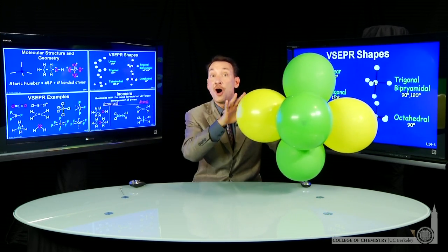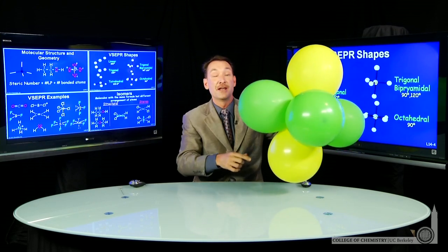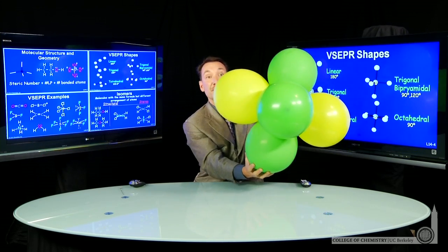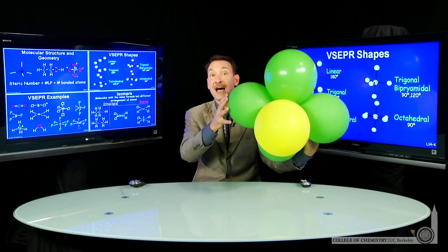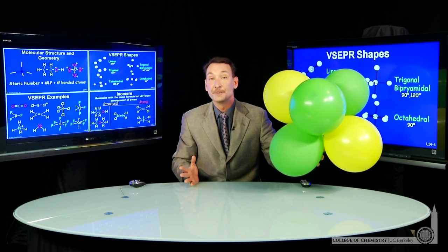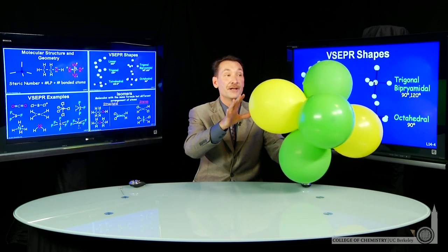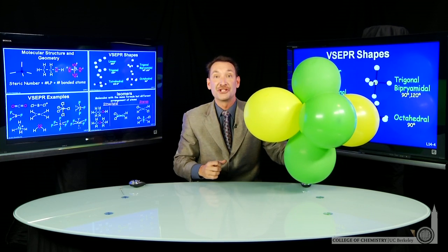In this arrangement, all the positions are equivalent. Even though I've got red and yellow balloons, the yellow balloons or the green balloons could be on top. Each position is identical. But what you have here is an octahedral shape.